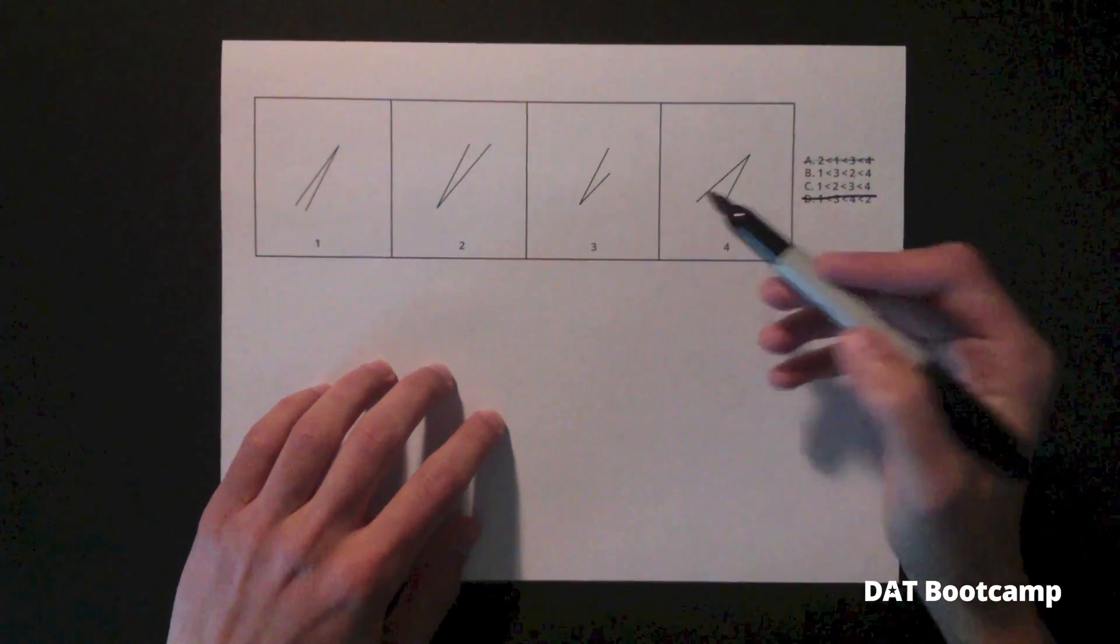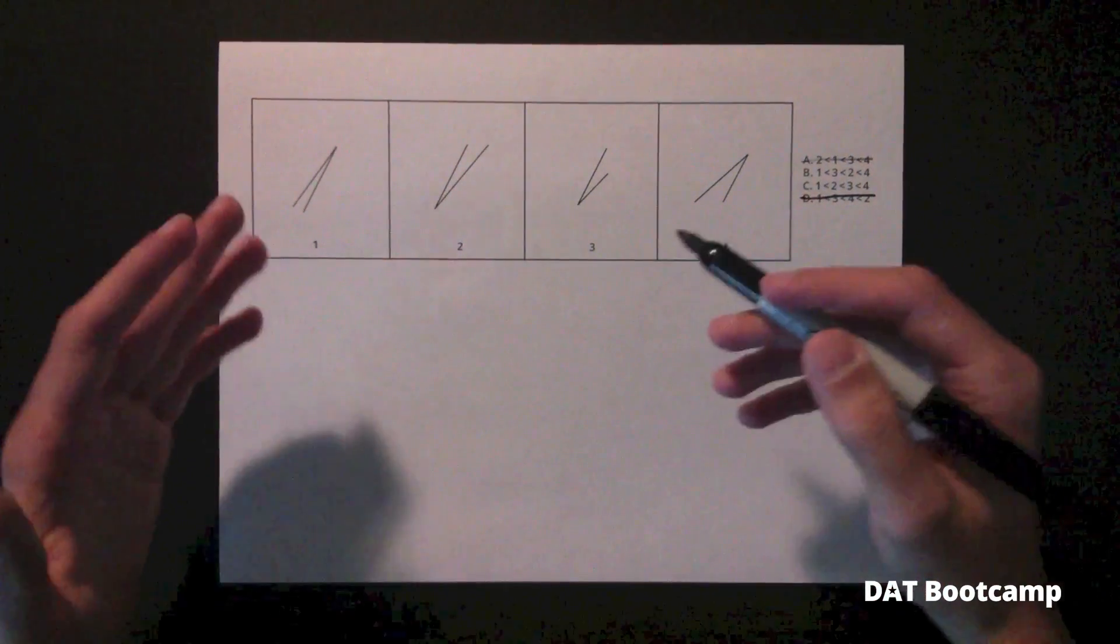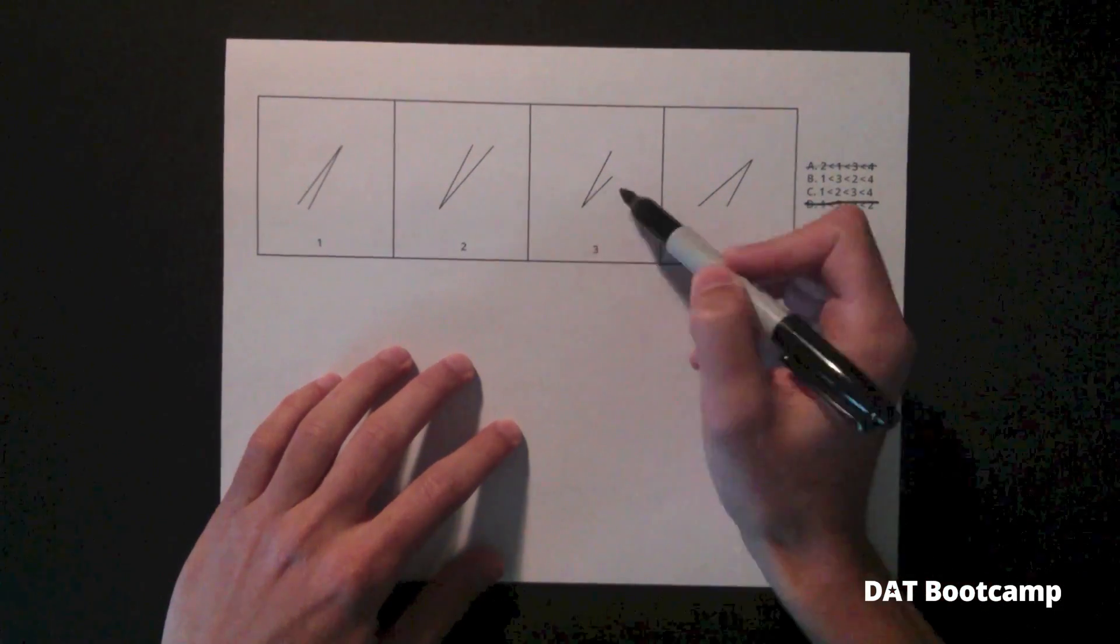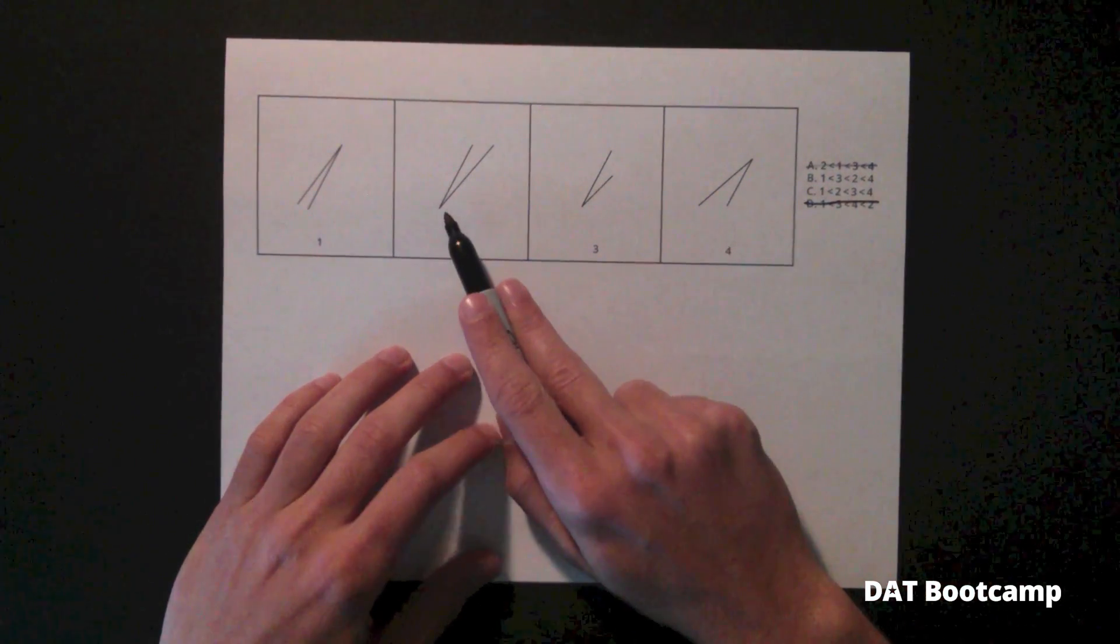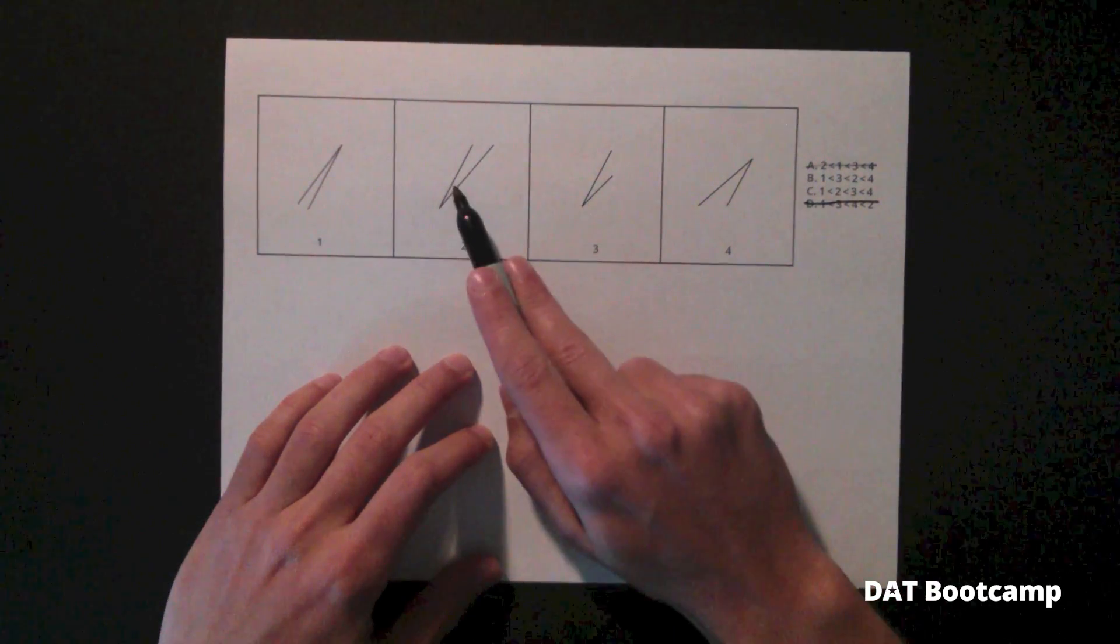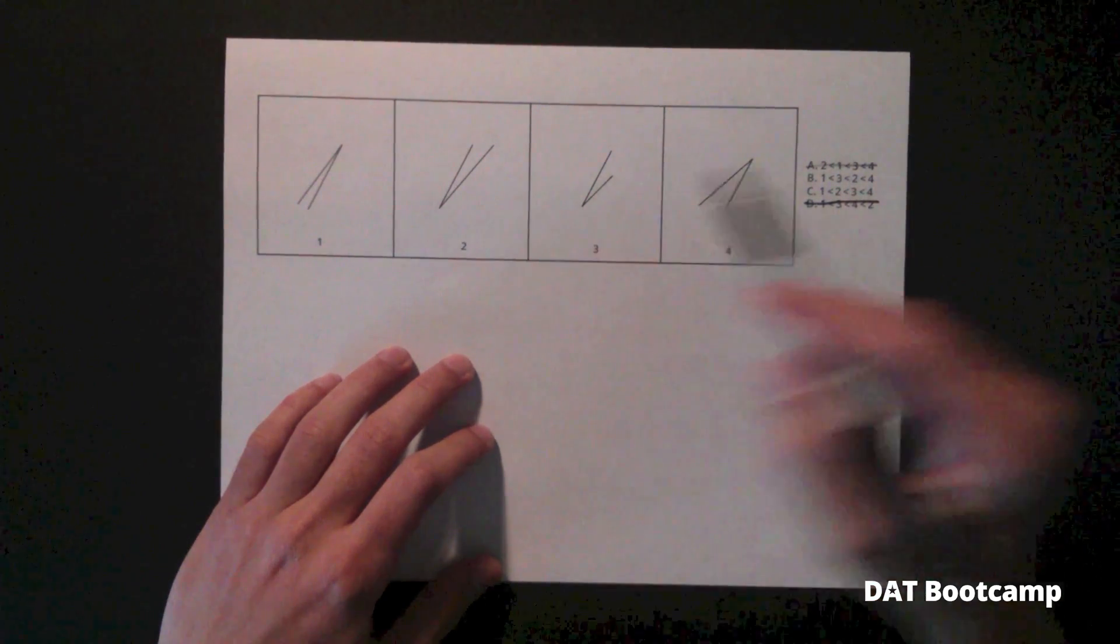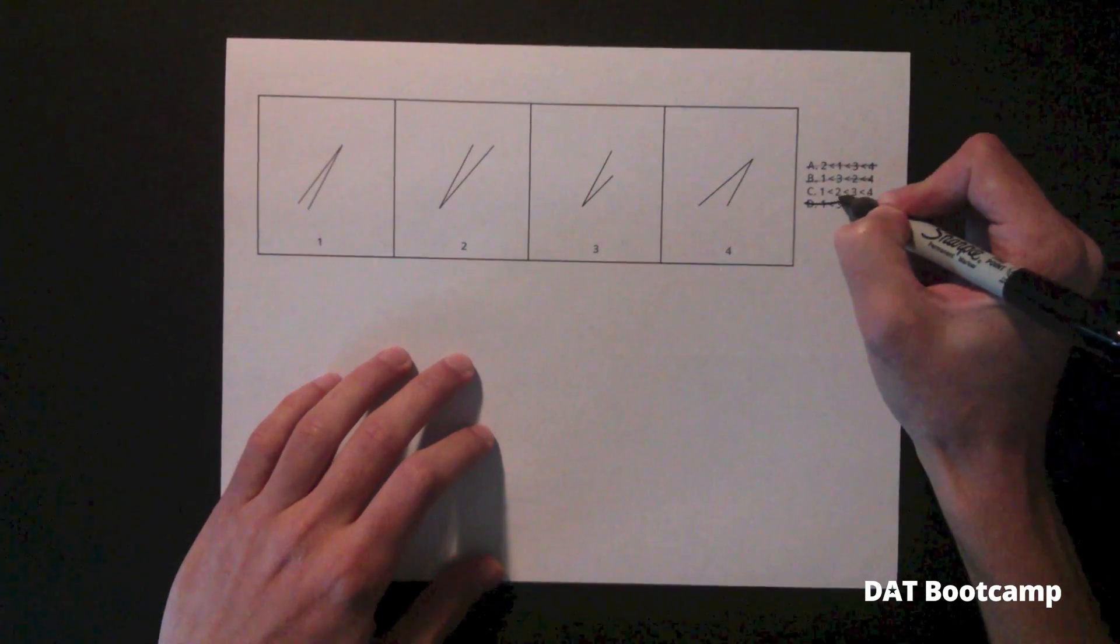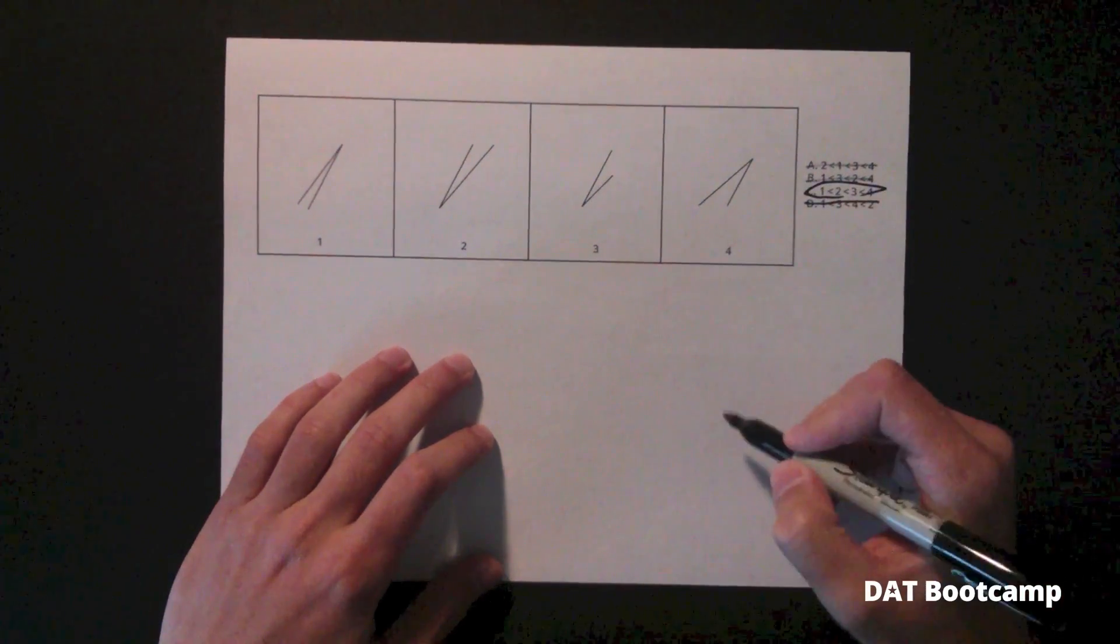Eventually, your skill at this will become better and then you'll just feel that one is smaller than the other. If you glance back and forth very rapidly, you'll notice that 2 appears to be smaller in this area than 3. Therefore, 2 must be the smaller angle. So that eliminates answer choice B and we're left with answer choice C as our final answer.